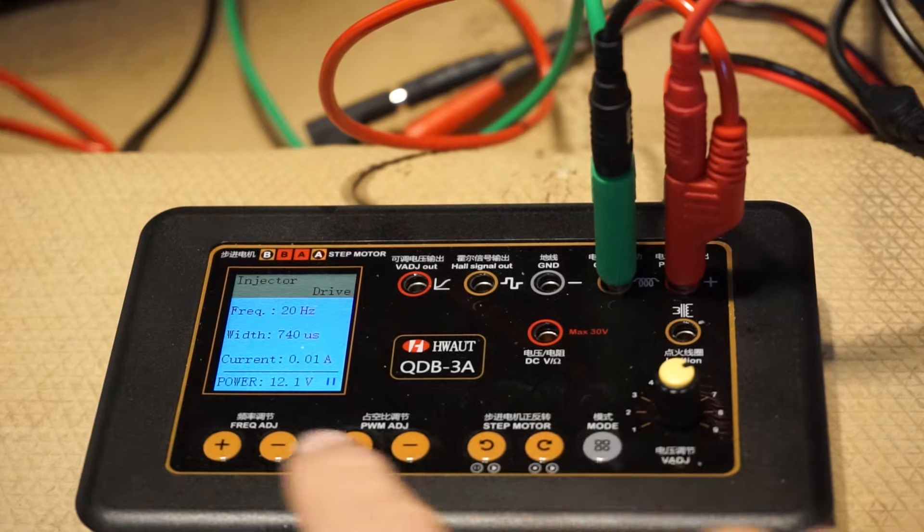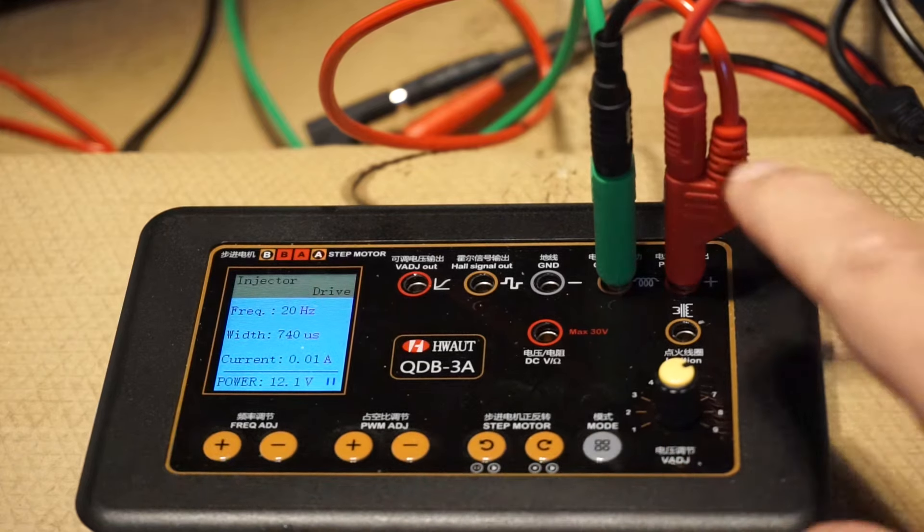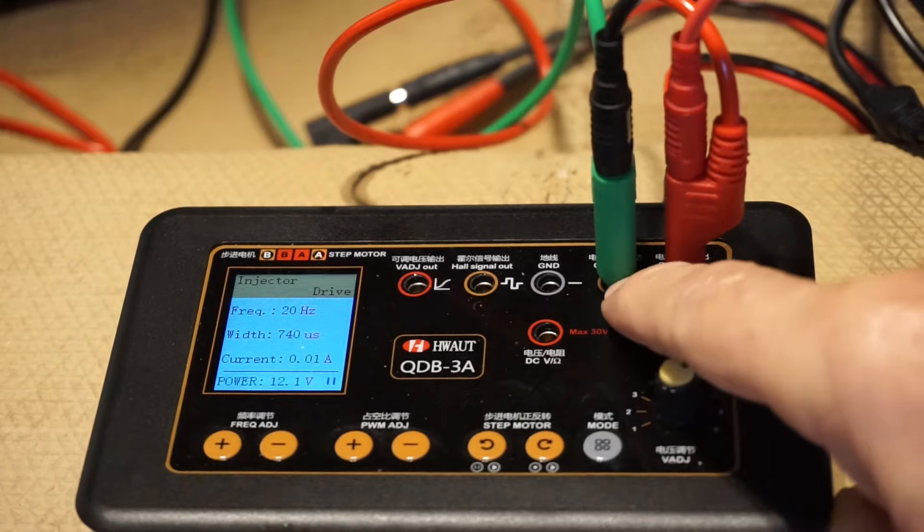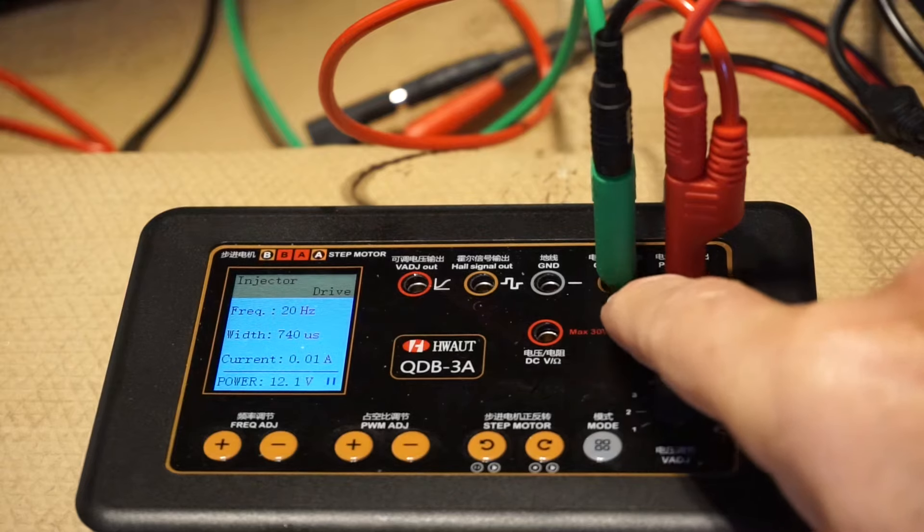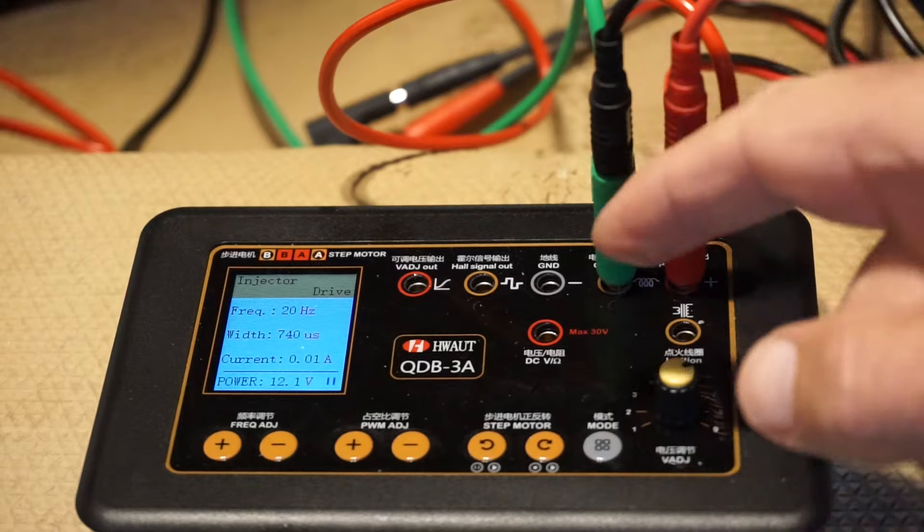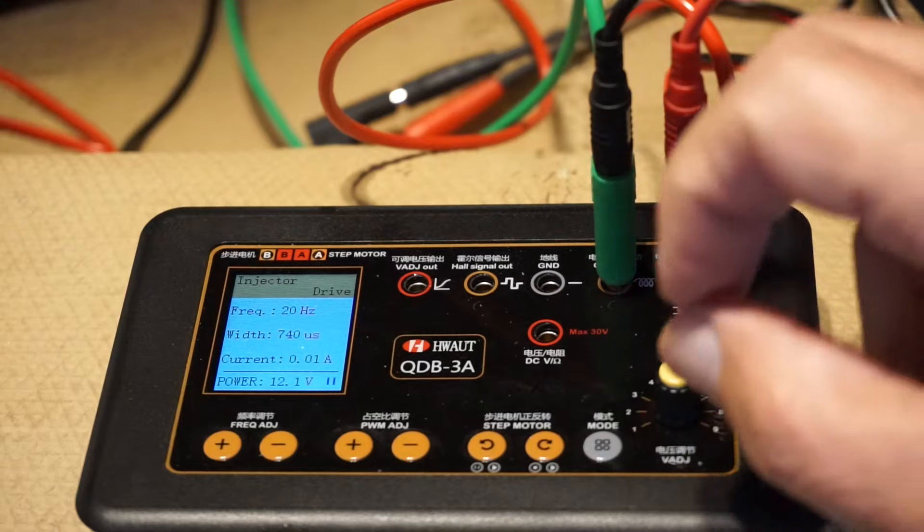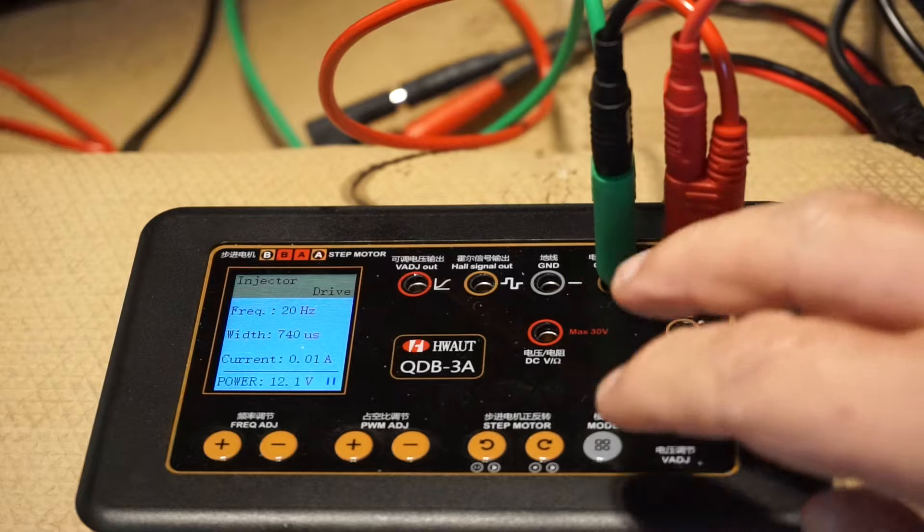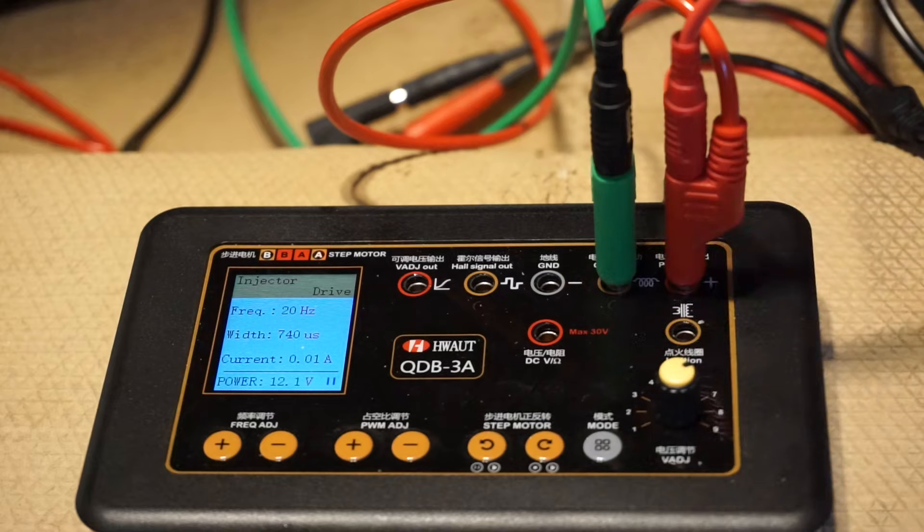Injector mode has been selected. The parameters have been set. We're only using the battery plus and the coil. Don't get misled by this thing that says coil. They don't mean ignition coil. They mean anything that has like a coil in it. Like any kind of solenoid, injector, that kind of stuff. That's what they mean by coil here.